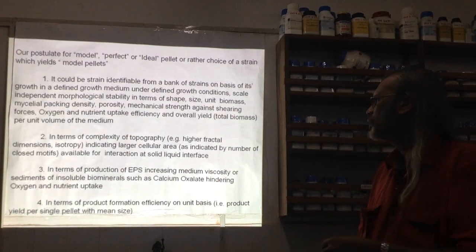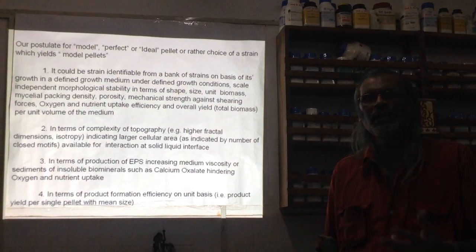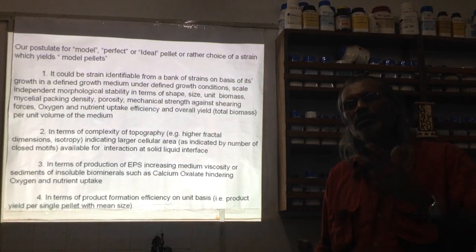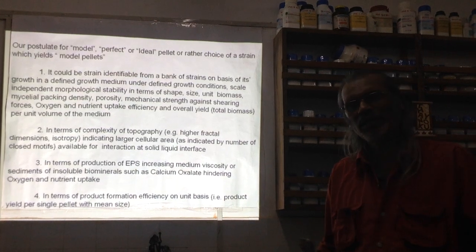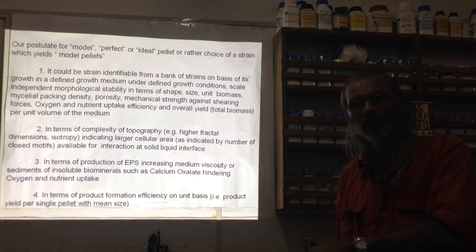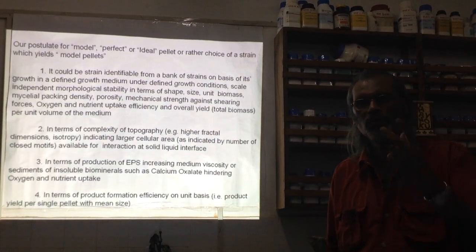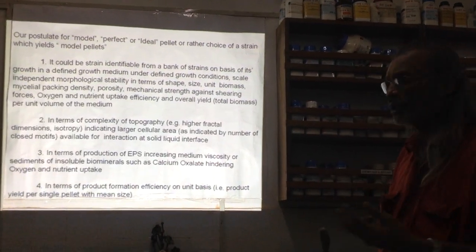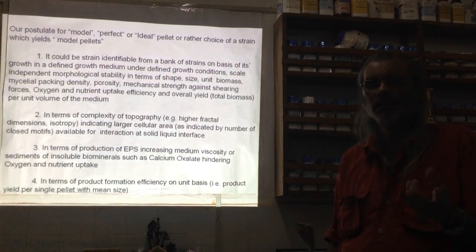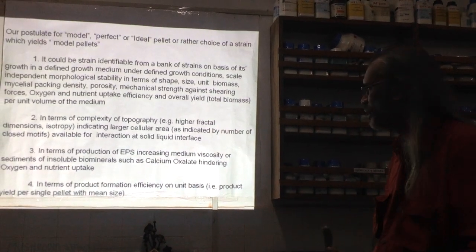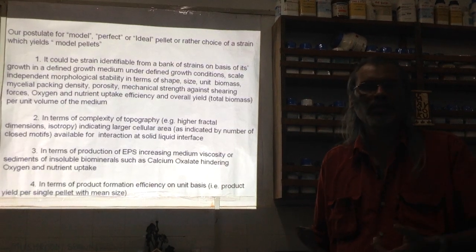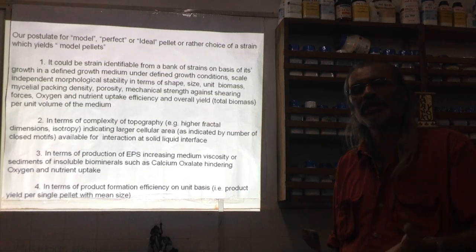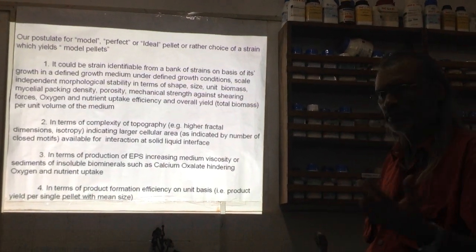Motifs are a very important idea in batch analysis of any type of landscape. Motifs, either open or closed, tell us something about the number of distinct surface features such as peaks, valleys, troughs, depressions, and areas of elevation, with or without boundaries. The number of motifs tells us about complexity. Regarding extracellular polysaccharide production: if the pellet produces a lot of EPS, medium viscosity increases, deterring oxygen diffusion across the pellet. Many micro-fungi also produce calcium oxalate from oxalic acid, which sediments and causes problems for pellet dynamics.